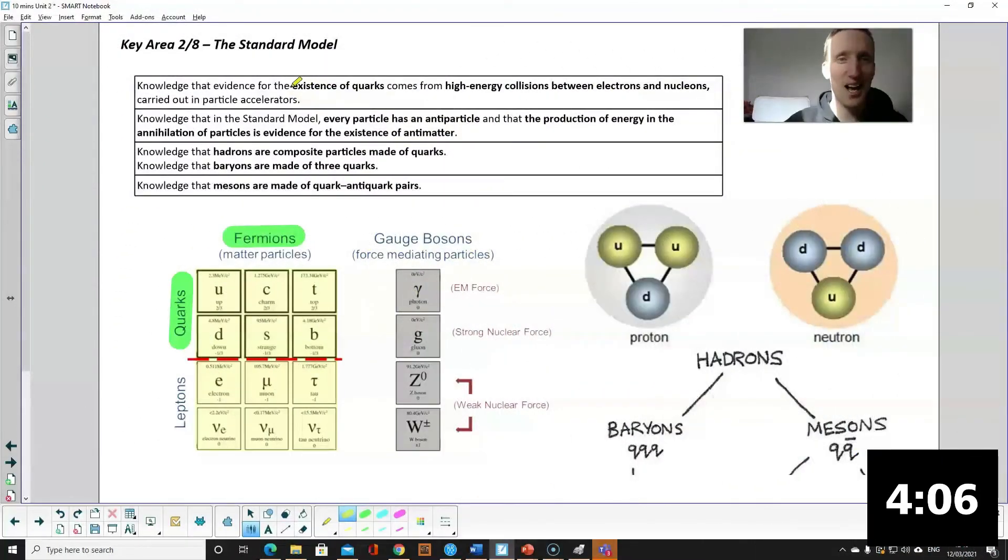Okay so we already know that things like quarks were discovered through these high energy collisions between electrons, nucleons, that's your protons and neutrons in our particle accelerator. We've also discovered anti-particles or anti-matter and we've discovered that every particle has an anti-matter equivalent.